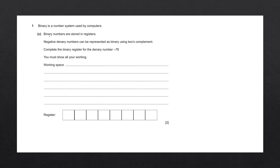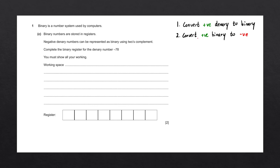Question C says binary numbers are stored in registers. Negative denary numbers can be represented as binary using 2's complement. Complete the binary register for the denary number negative 78 — you must show all your working. To complete this question we'll follow two steps: first, convert the positive denary number to binary (positive 78); then convert the positive binary number to negative.